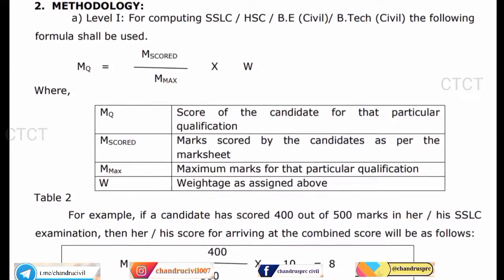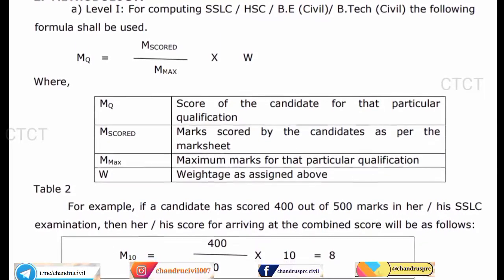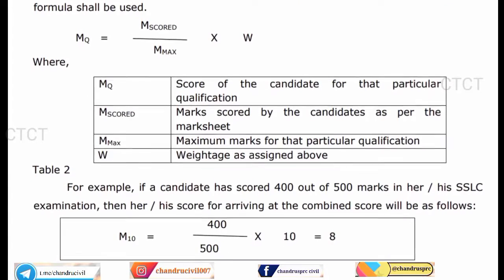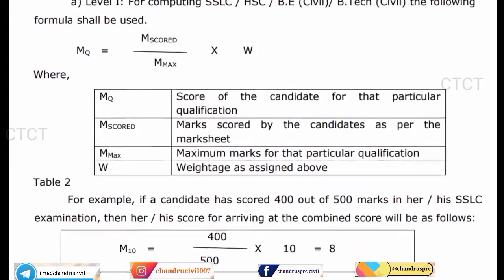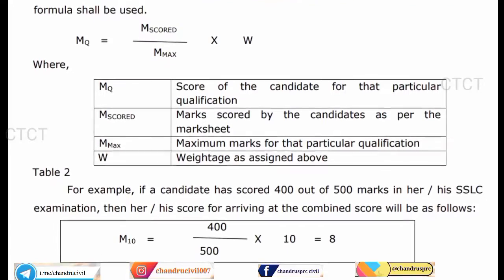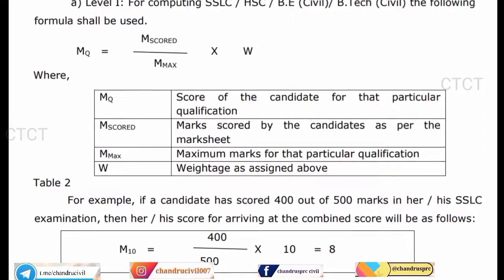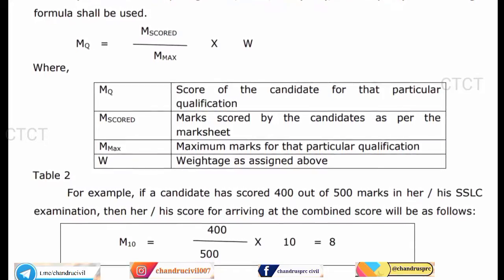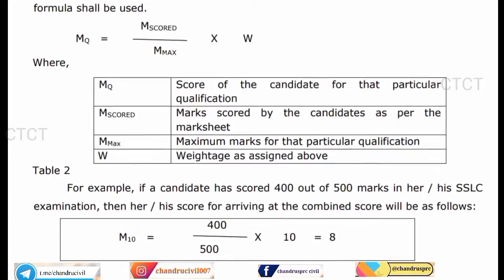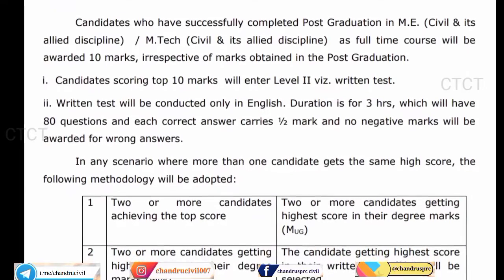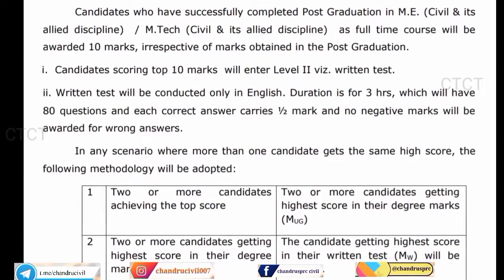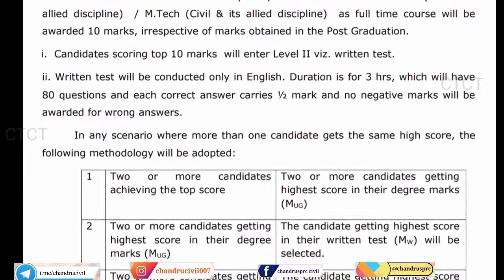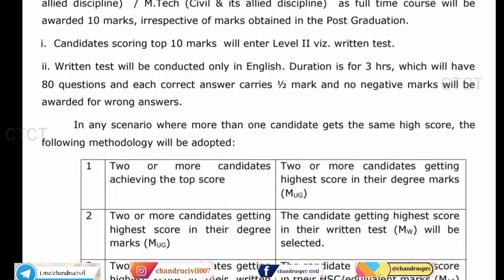If a candidate scored 400 out of 500 marks, this is the C-Examination — you have to calculate with that.